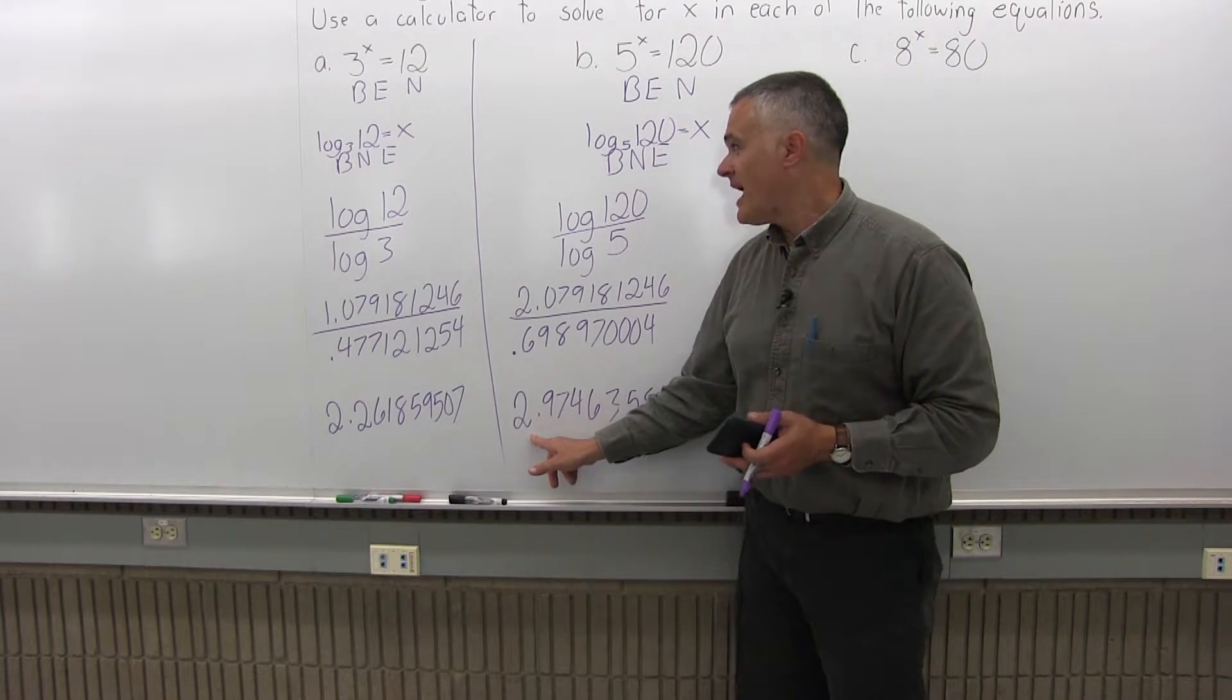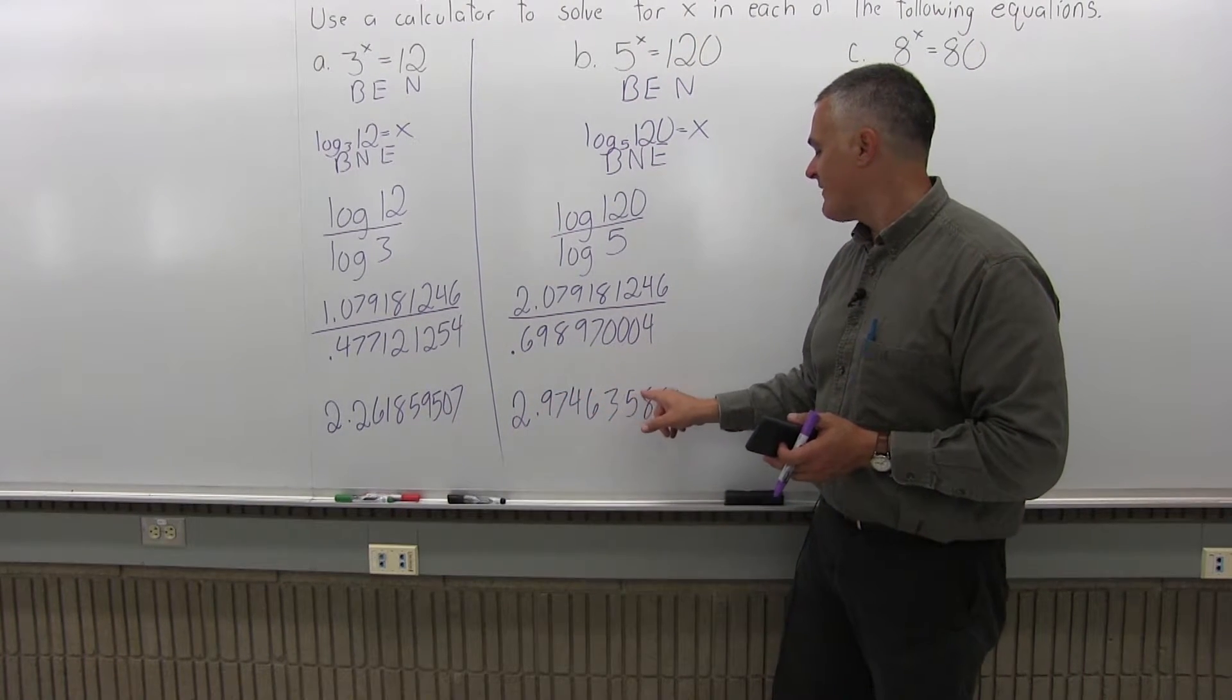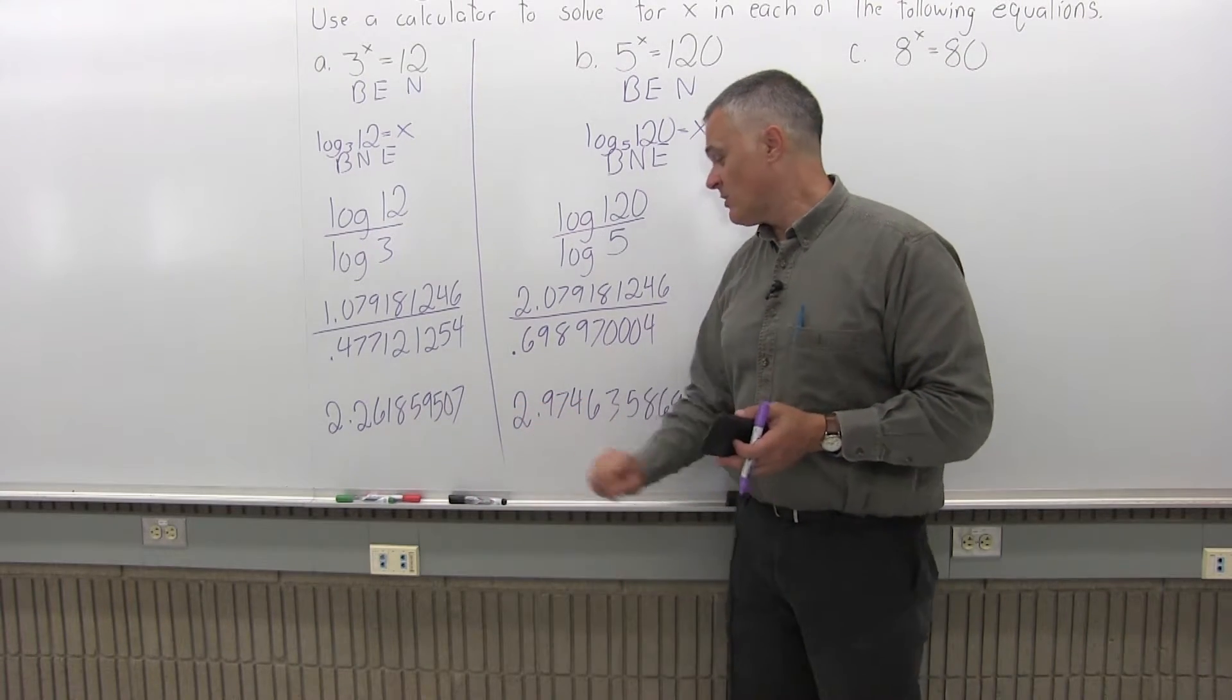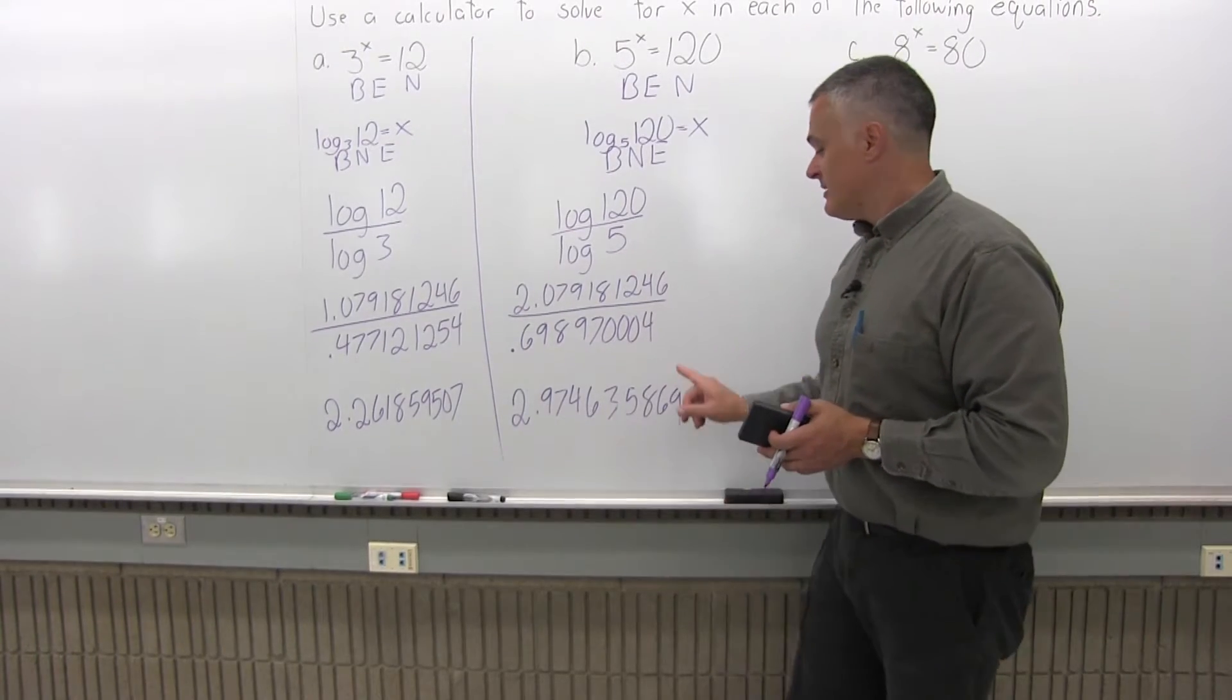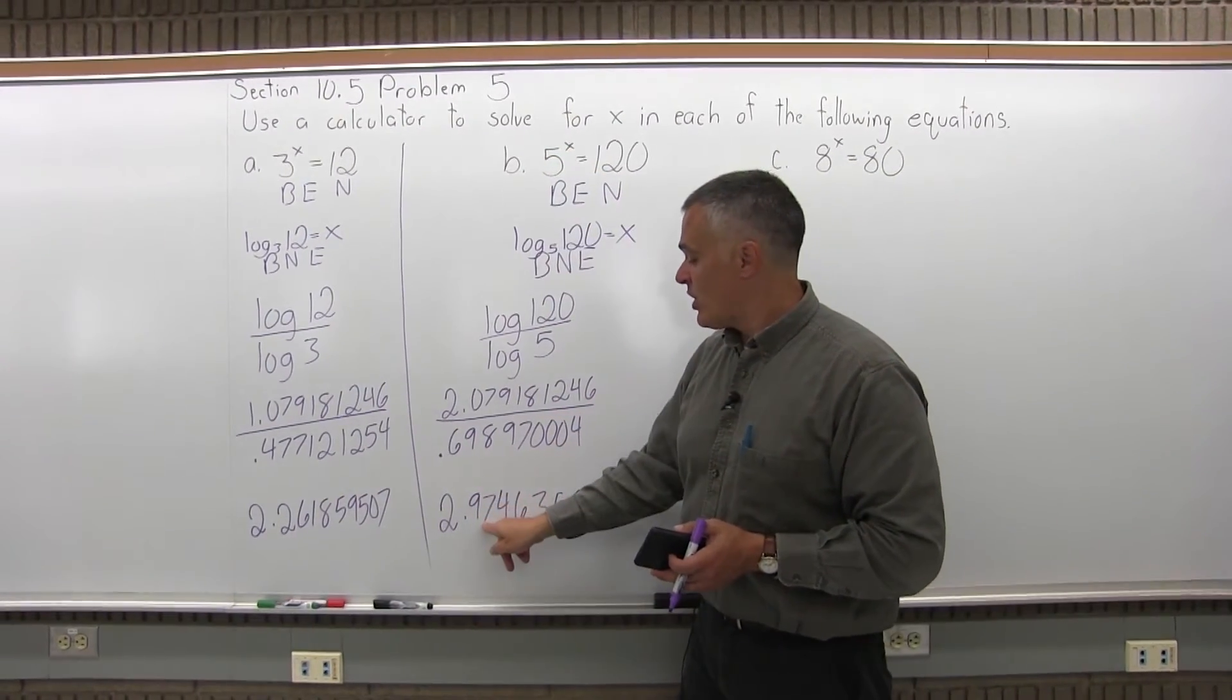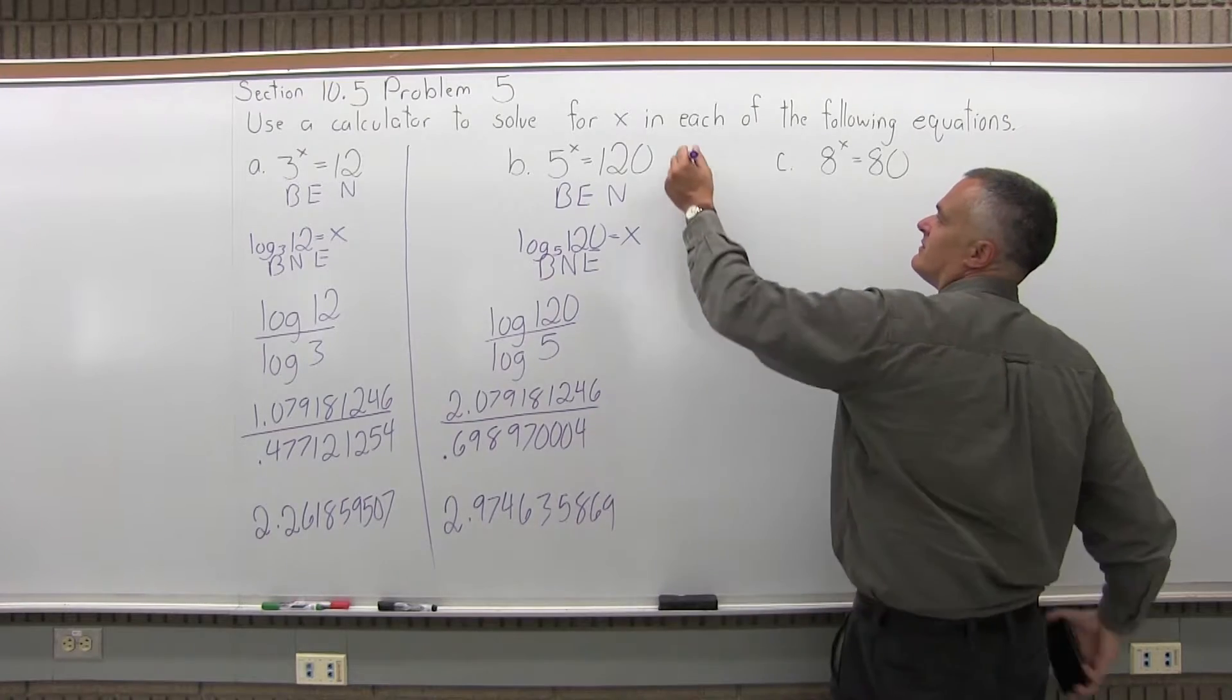So again, that's the exponent of the 5 that you would need to get 120. 5 to the 2.974635869 power is going to give you a result of 120. And again, remember, I estimated this to almost 3, and that's almost 3. And like part A, while the number's on your screen, if you want to double check, save it memory, store it, then clear your screen, put 5, press your exponent button, recall the memory for the exponent, hit equals, and the answer will come out to 120 if you want to check it. I like problems that you can check the answer to verify.